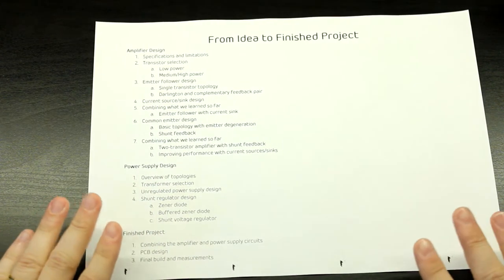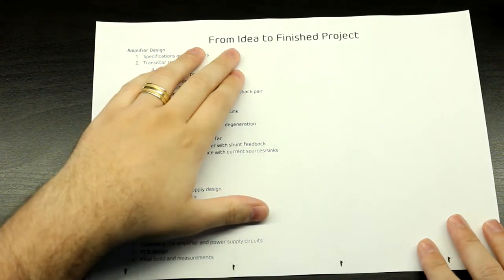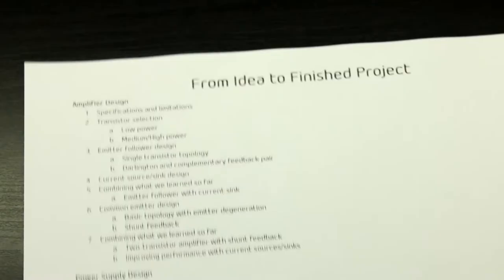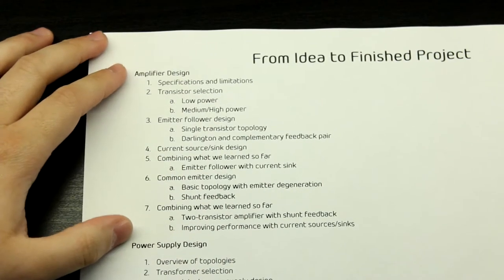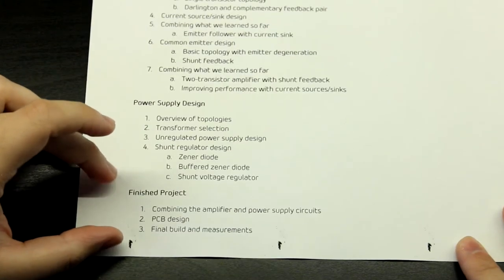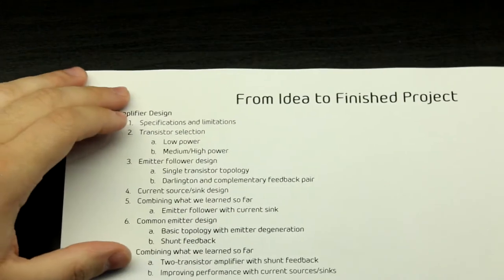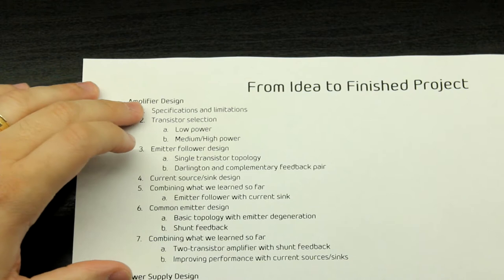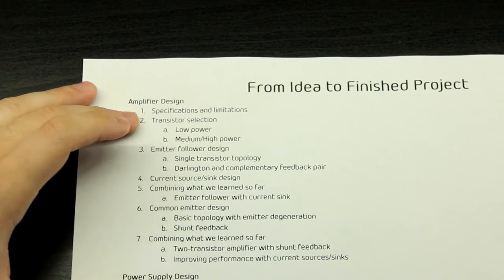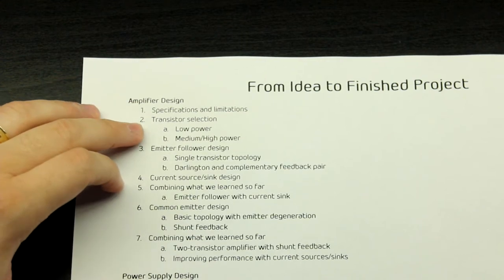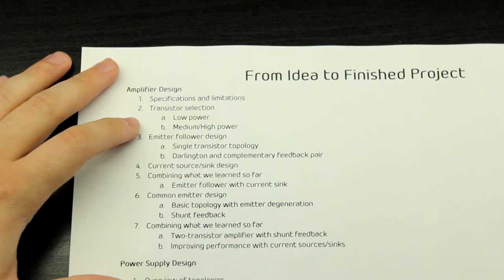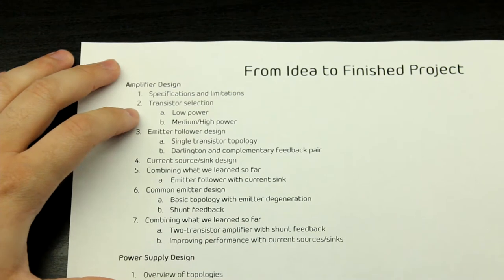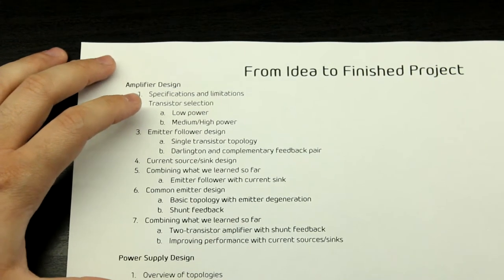This is the full idea from conception to finished product — the steps we are going to be taking. I've divided this into three sections: amplifier design, power supply design, and then the finished product. First, we've gone through the specifications and limitations. Next, we are going to look at transistor selection — low power solutions and medium and high power — basically learning how to read a datasheet and choose a transistor for the project.